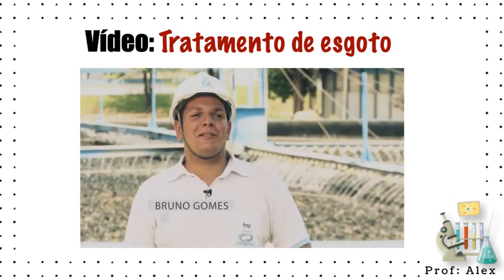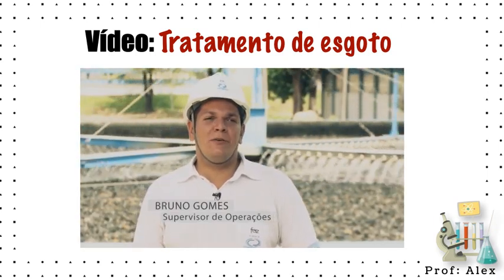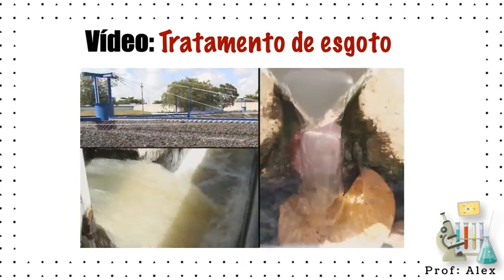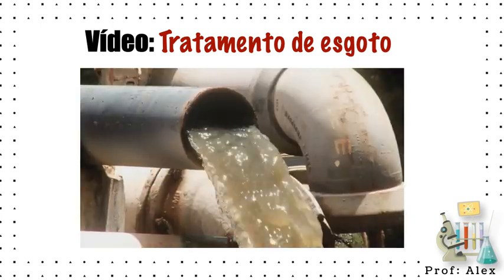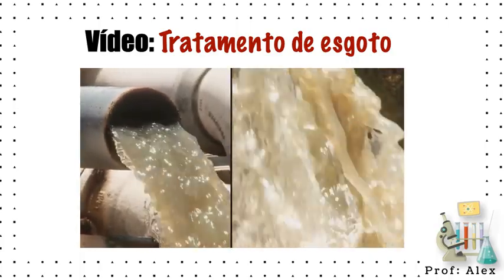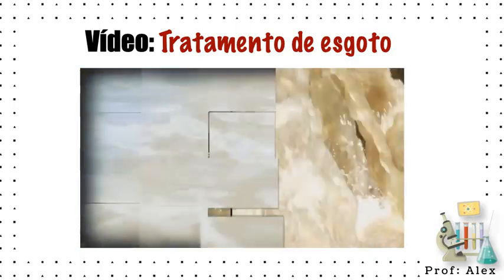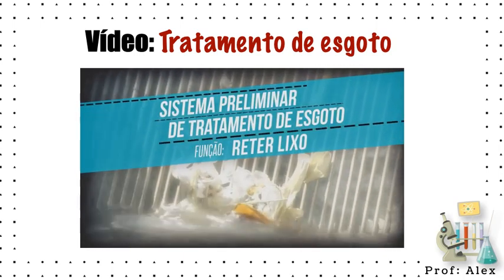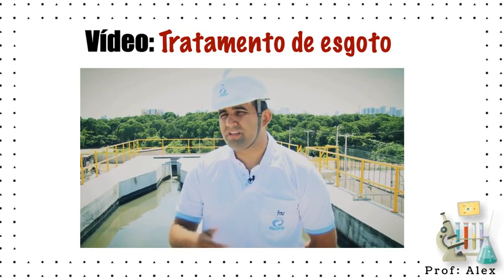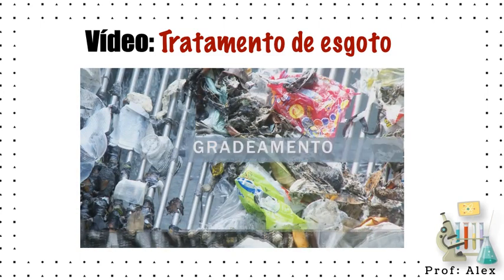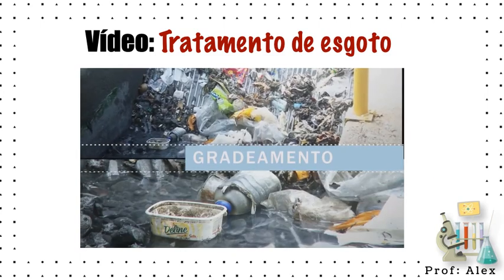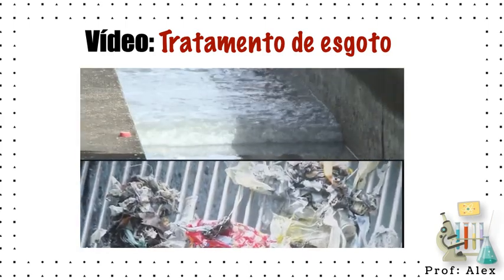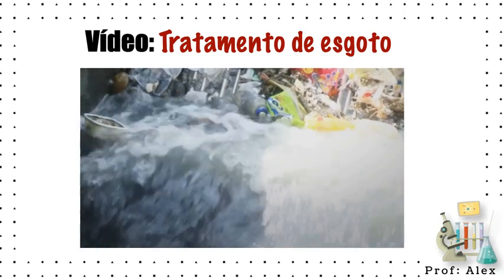The function of the waste treatment station is to reduce the pollution and return treated water to the rivers and environment. The waste comes here through the tubulations from the street and through the pumping stations. The preliminary system is responsible for the retention of waste and sand, making this system indispensable.